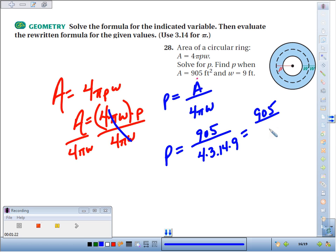When we simplify that, or when we actually divide it, 905 divided by 113.04, we get approximately 8. We are measuring—let's see, we're finding P and we were measuring in feet—so this would be 8 feet.